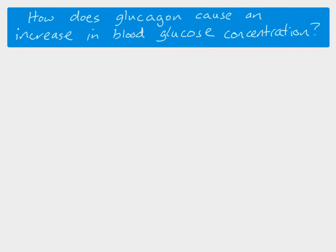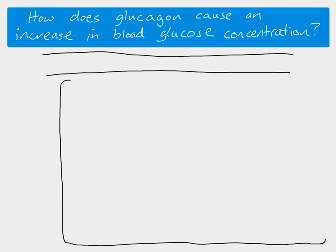Glucagon is produced when there's been a decrease in blood glucose concentration, and it's released in order to increase the blood glucose concentration back to the set point, which is what the body wants to achieve. The way it does this is by acting on liver cells.